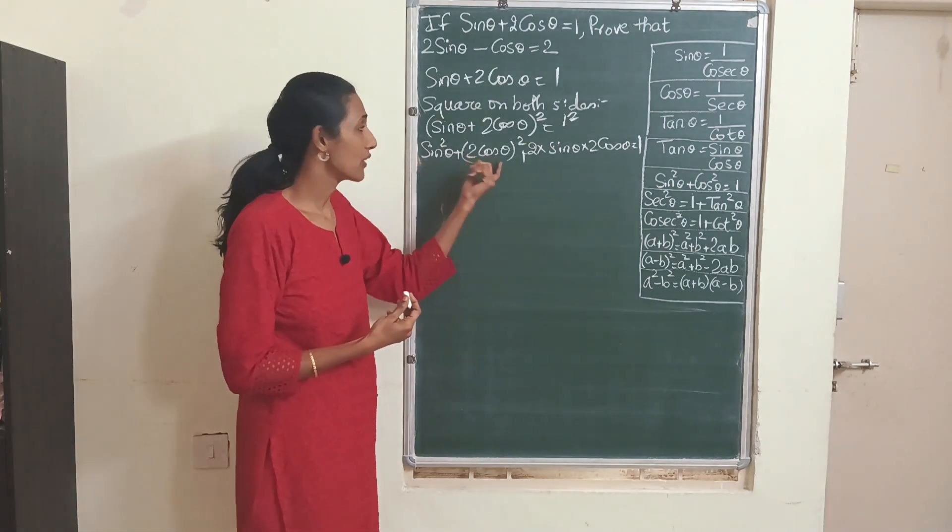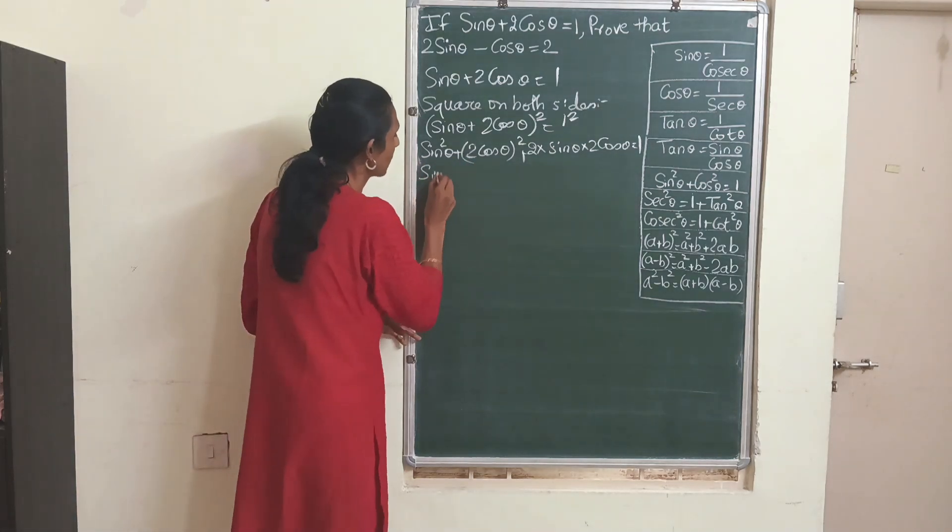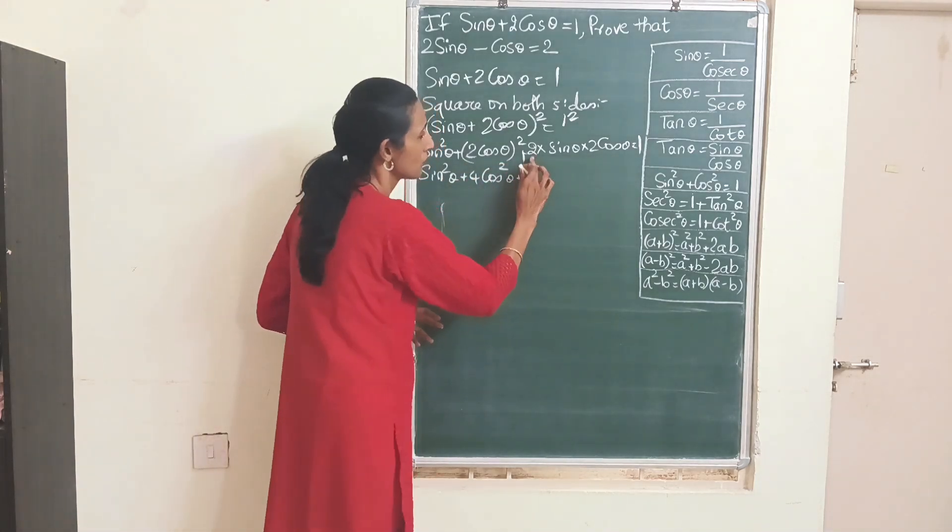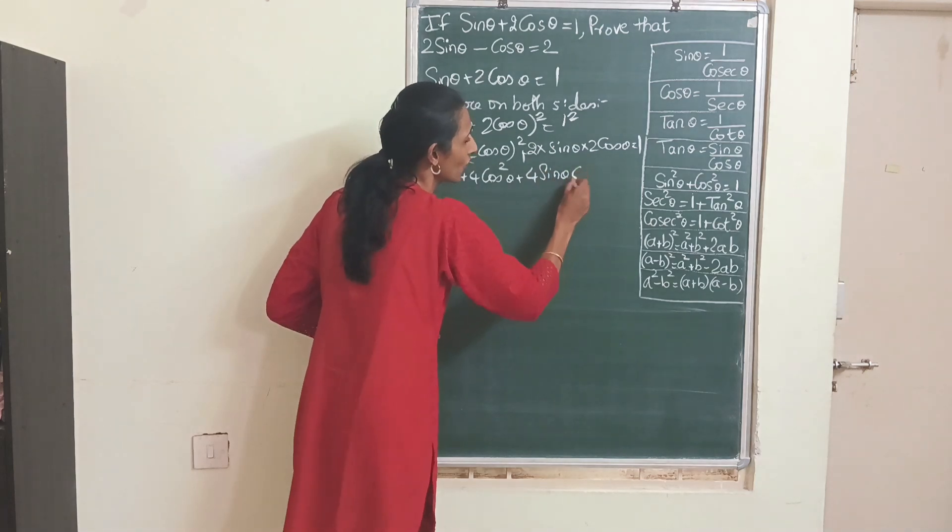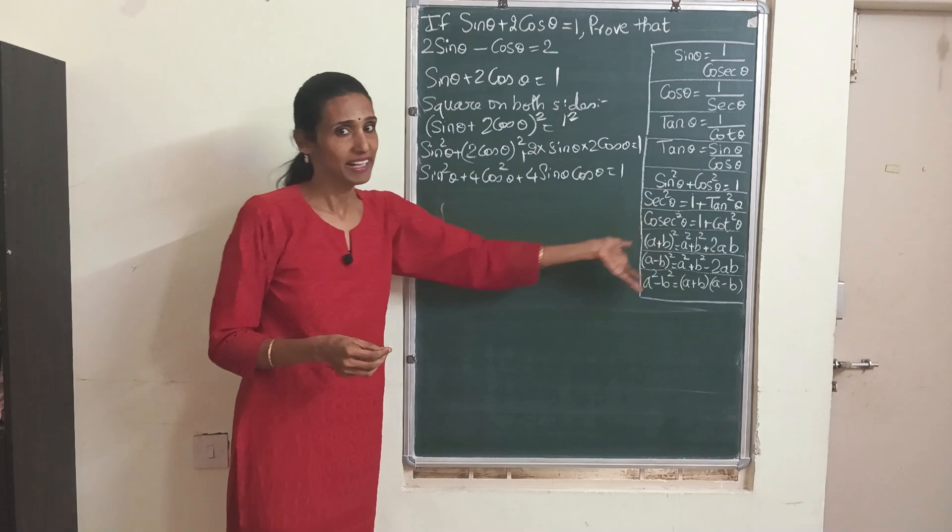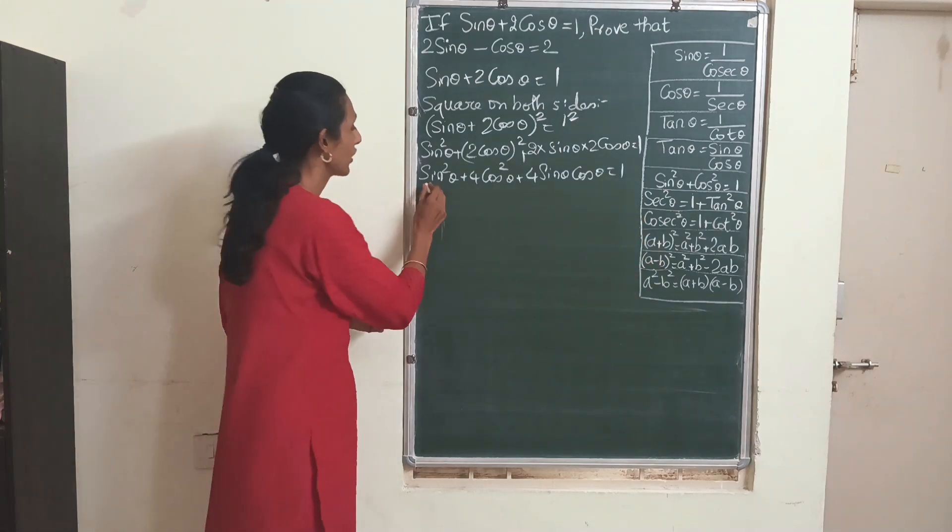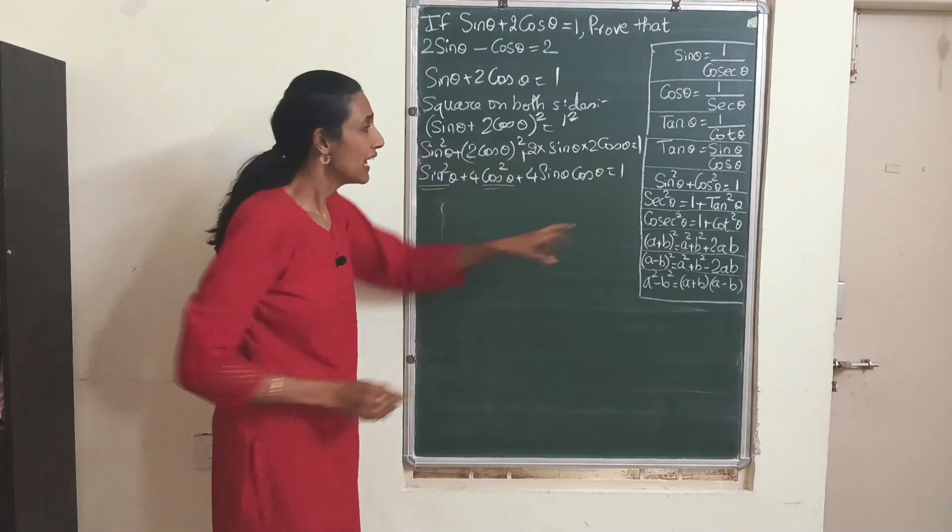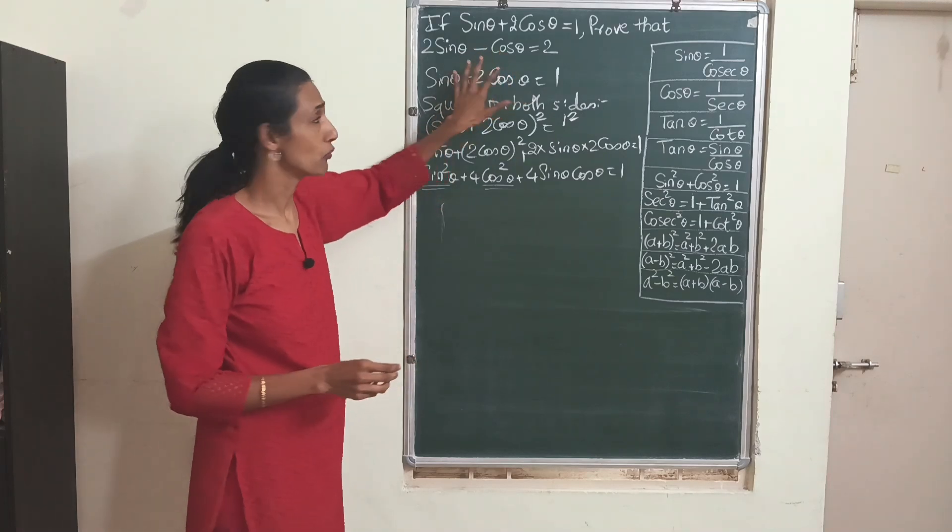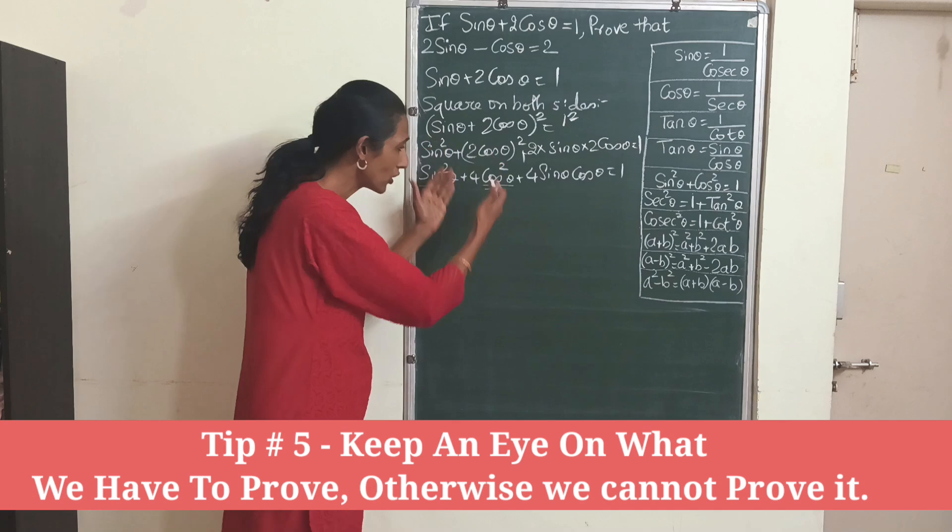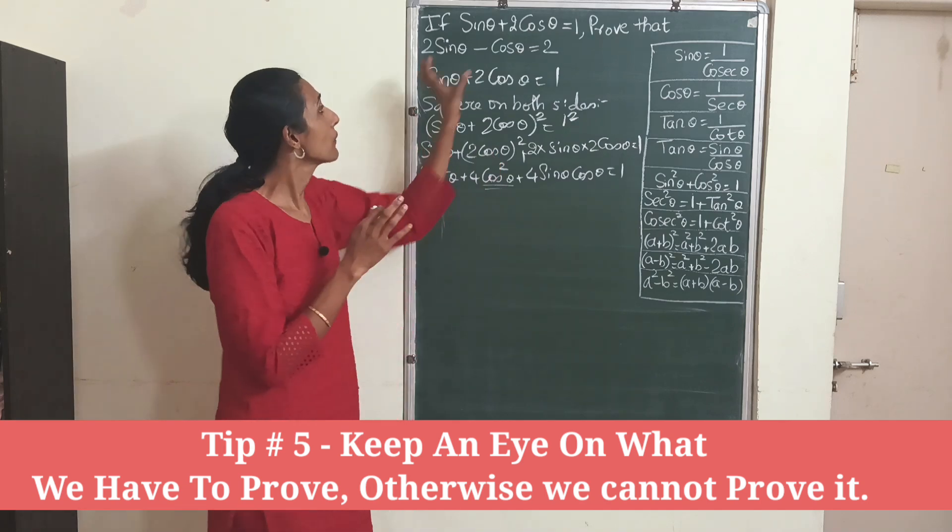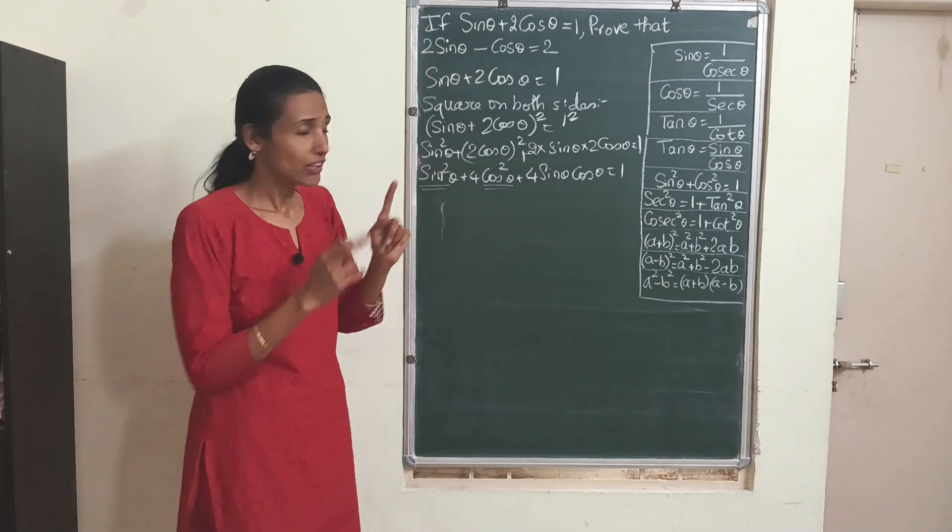We have got sin square, we have got cos square also. Let me write this as 4 cos² θ and this will be 4 sin θ cos θ. Now sin θ cos θ I'm keeping it as it is. Because we have sin² and cos², let's use this identity. Always have a look at what you want to prove because if we keep on solving we will simply get lost. Remember what we have to prove is this, keep an eye on that.